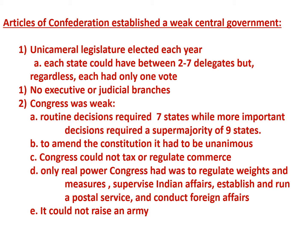The only real powers the Articles of Confederation Congress had were to regulate weights and measures, supervise Indian affairs, establish a postal service, and conduct foreign affairs. But it couldn't even raise an army — even in this regard it had to ask the states. It was an incredibly weak central government.